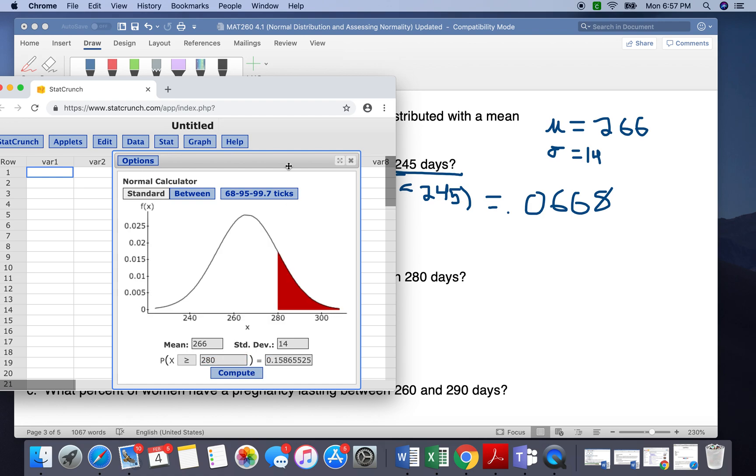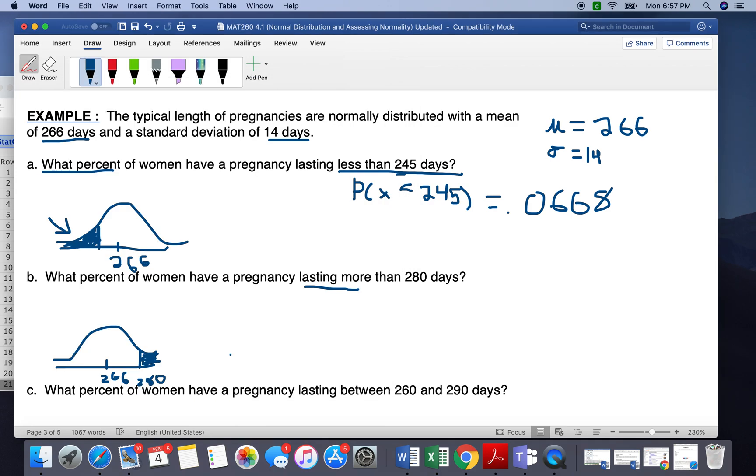So we can see, similar to our picture, 280, and we get 0.158, round that up to 7. So 0.1587. So about 16% of women have a pregnancy lasting more than 280 days.